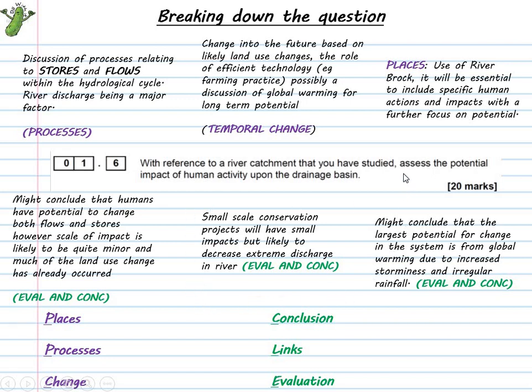In terms of AO2, the command word is to assess the potential. So how much is human activity now and in the future going to affect the drainage basin? I think it'd be quite easy to consider positive and negative effects on the drainage basin. I would try and avoid this—it's hard to define what a positive and negative effect is. But simply talking about whether it would increase the store or decrease flows within a river channel, I think that'd be a much more effective answer.